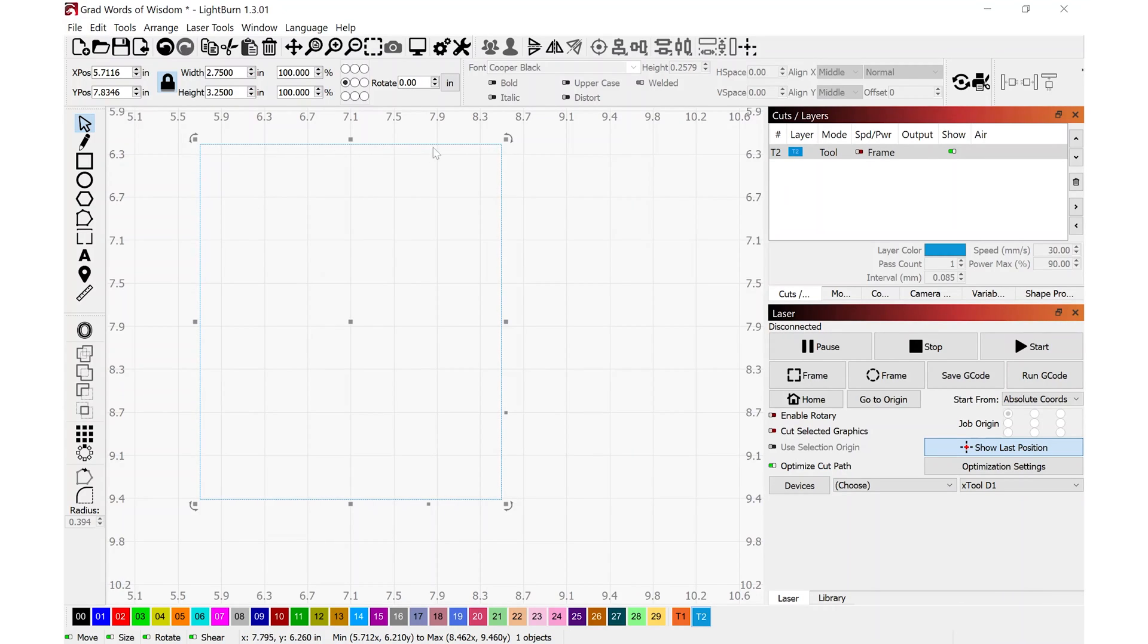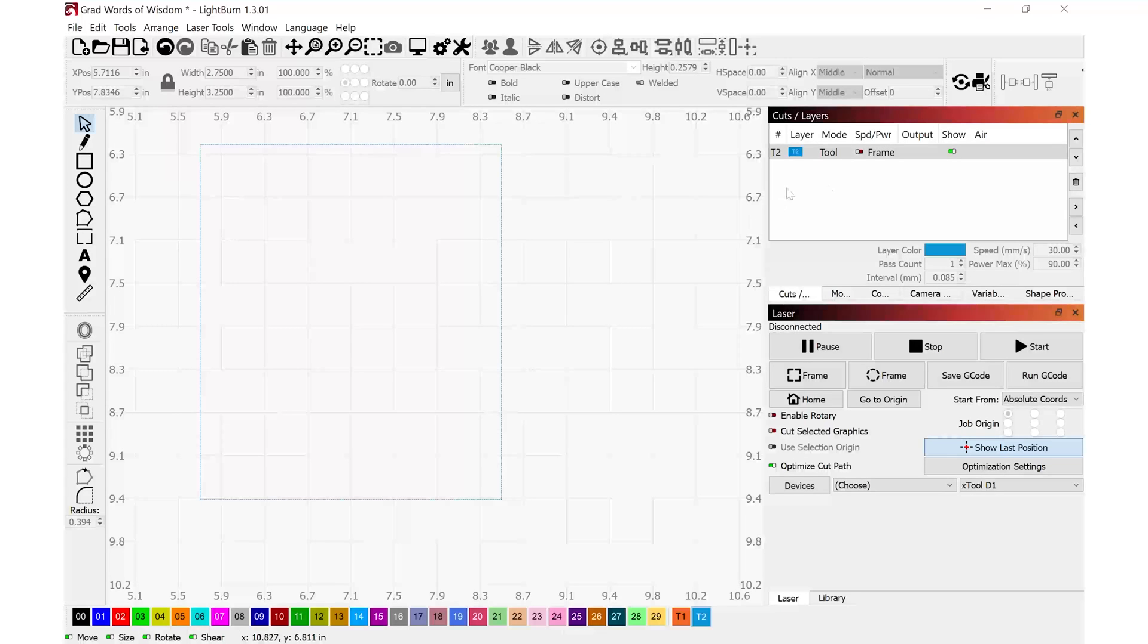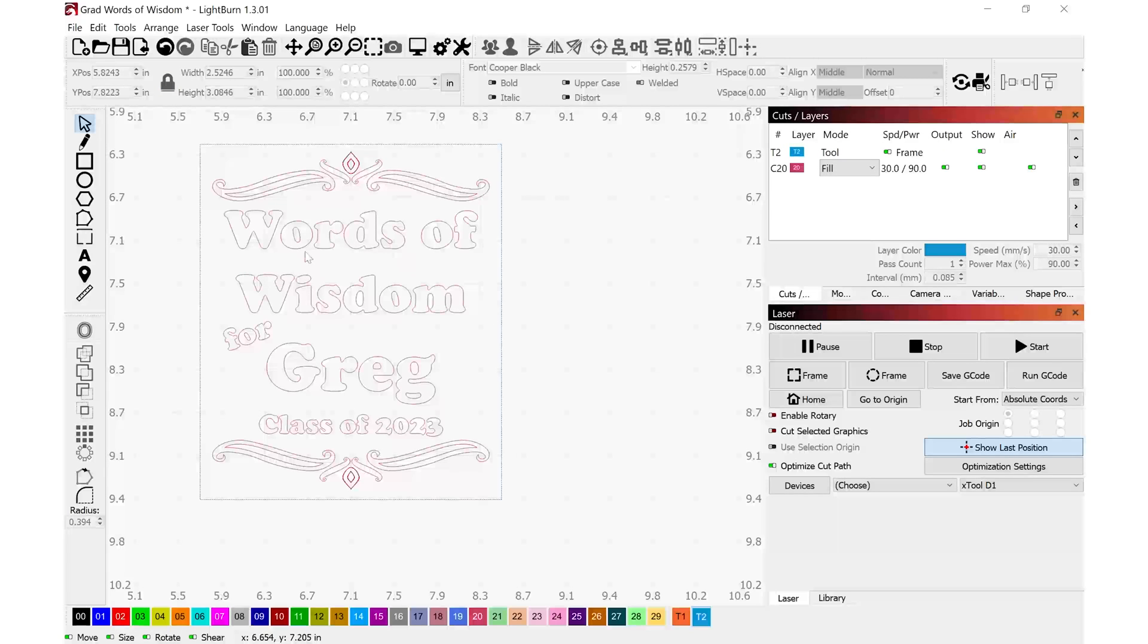In Lightburn software, I have this blue box highlighted. I have some measurements that I've already typed in for the width and the height that matches the front face of the glass jar. Any graphics that I put on this page, I want to make sure that they fit well within this blue border. This blue box that I have drawn, I have that on layer T2. This is a tool layer that is used as reference in Lightburn software. This is a layer that will not cut or engrave and it's used exactly for this for layouts and alignments. Let's look at the graphics I have set up for this project. Here I've got some artwork across the top, the phrase 'words of wisdom for Greg, class of 2023,' and then I took that same graphic on the top and I mirrored it and placed it on the bottom.